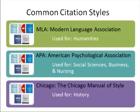Proper citations are needed to avoid plagiarism. When you cite or give credit to an author for their words or ideas, you are creating a citation. There are strict guidelines for creating citations, and a number of different citation styles that are used depending on what subject area you are writing for. Here are some of the most common citation styles and their respective subject areas.